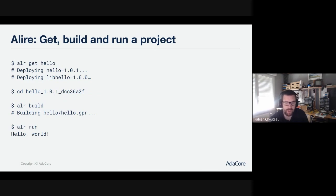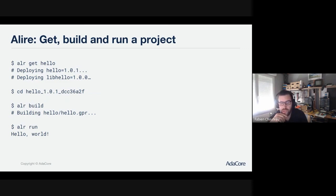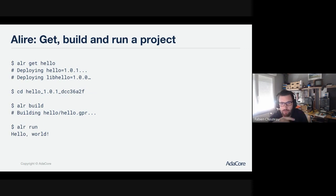A basic example of how to get and run a project available in the Alire ecosystem: the basic command is 'alr get hello'. This will download the sources of the hello project and also the dependencies of that project — we have a lib-hello dependency here. Once the sources are downloaded, you go into the directory and run 'alr build' to compile your project and 'alr run' to run it. It's just as simple as that.